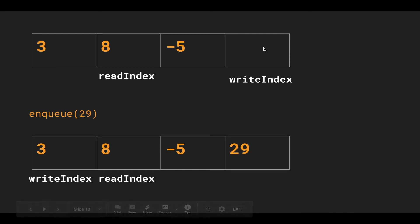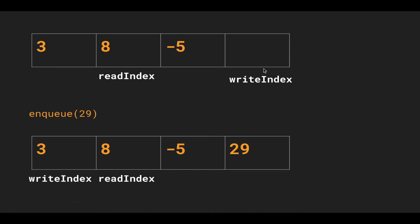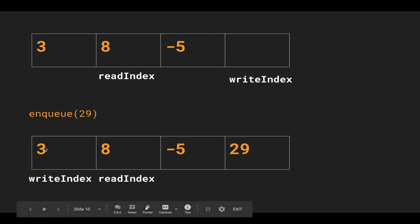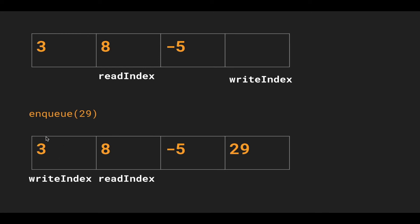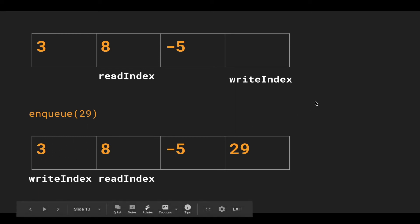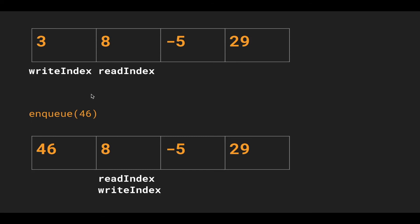Next, we enqueue 29. Write index is pointing to the next spot where we want to write, so we enqueue 29 and then advance it. But since it's out of bounds of the array, we circle it back to the first element. Notice that even though we have 3 there, it will be overwritten by the next enqueue operation — that's why we didn't need to set it to null. So we enqueue 46, write index is pointing at element 0, and we overwrite it with 46.